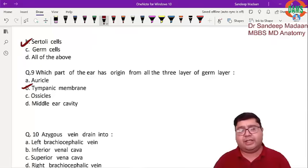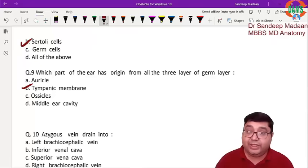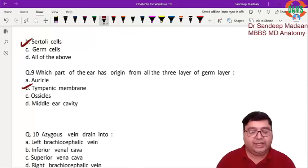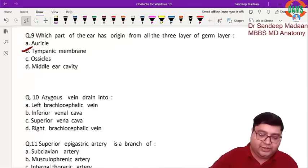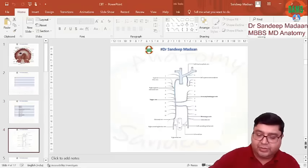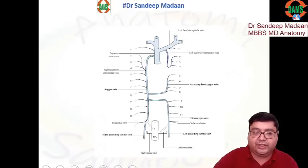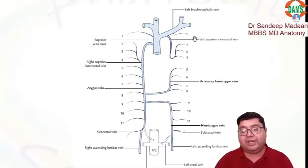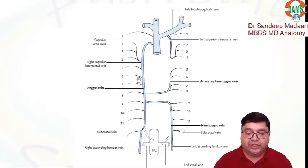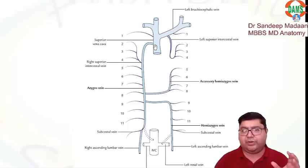The next question mentions the azygous vein — it drains into what? The azygous vein is on the right side; the name 'azygous' means without a partner. It drains into the superior vena cava (SVC). That is the straightforward answer.